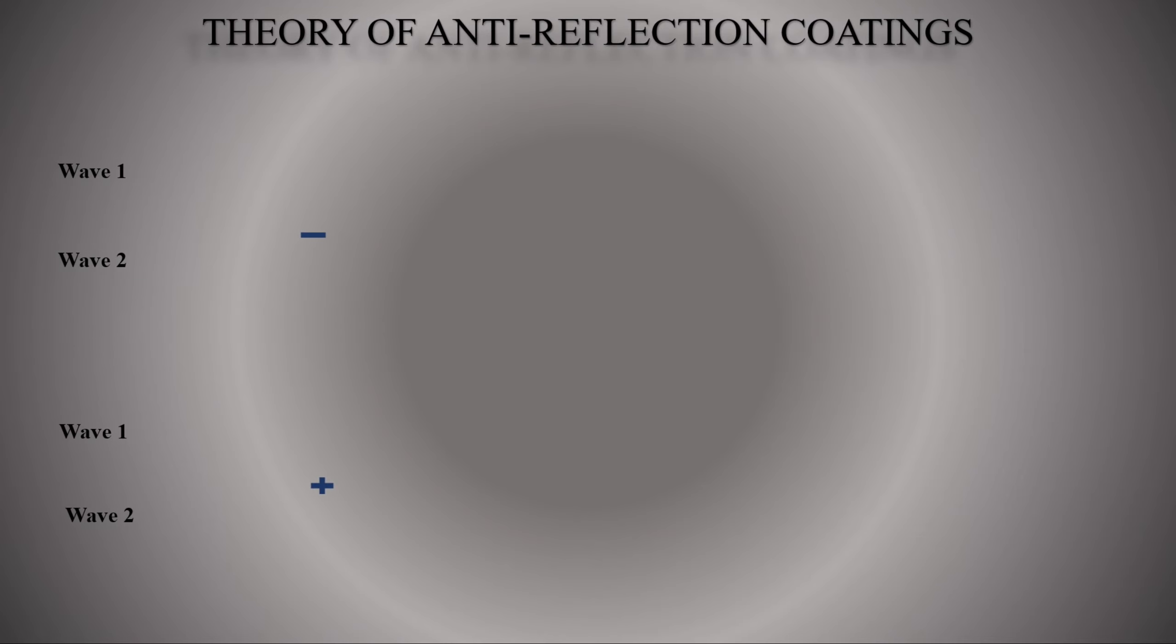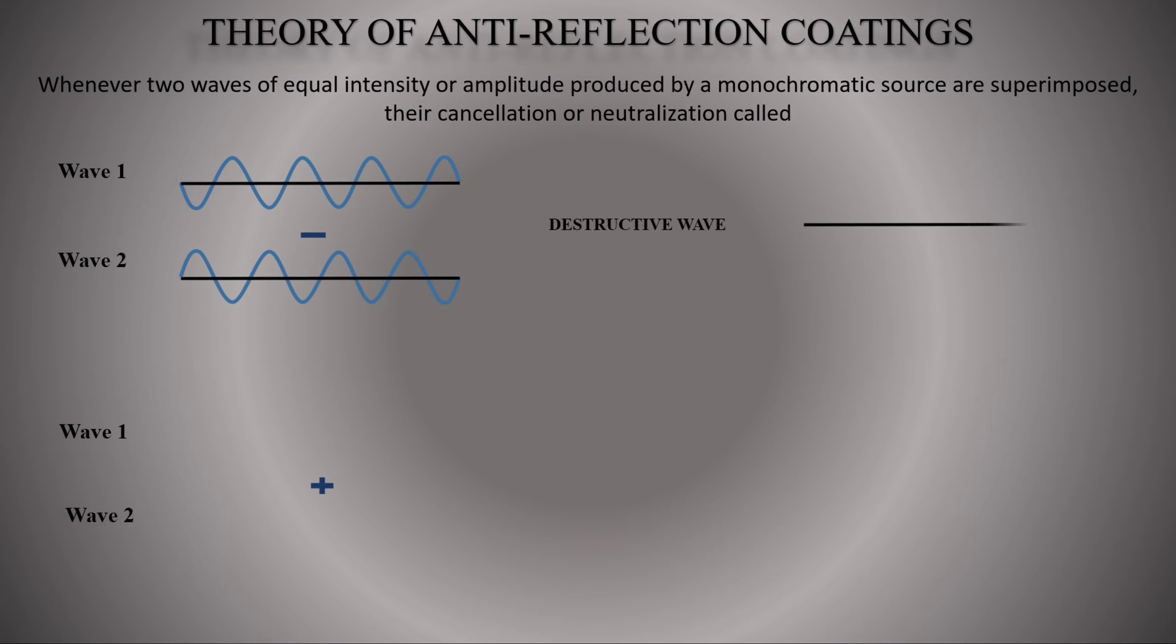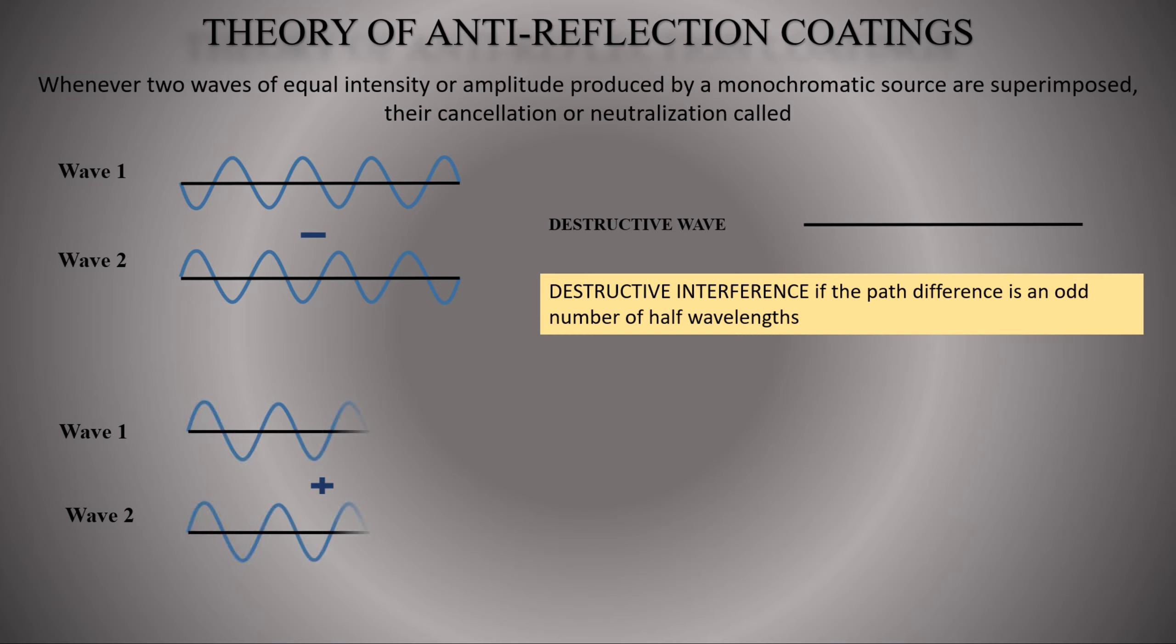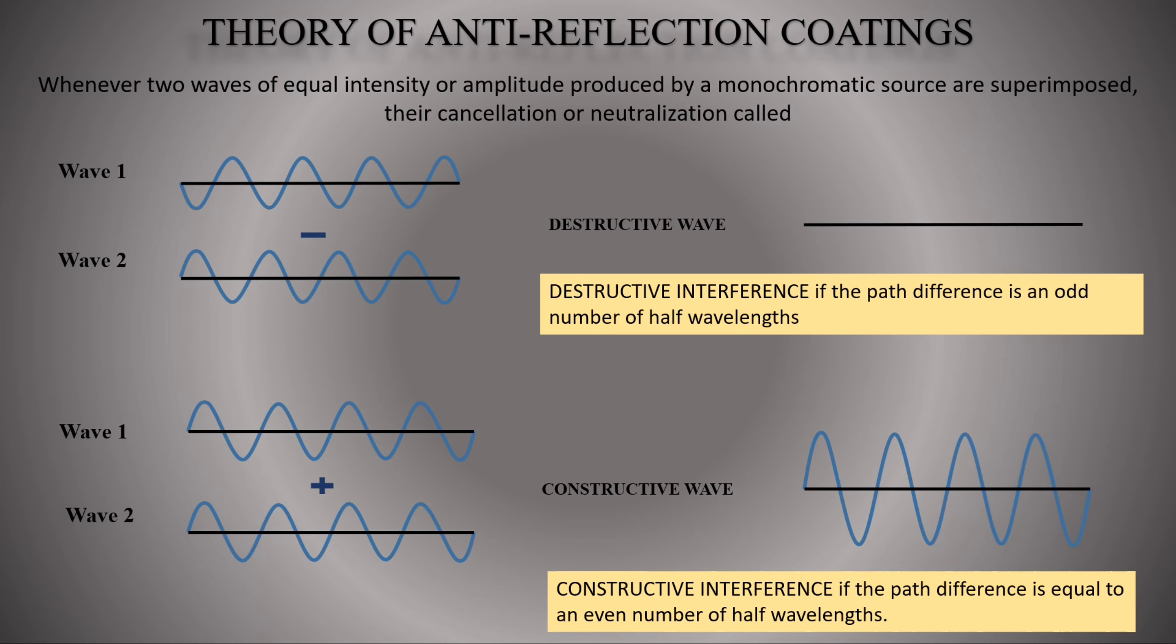Theory of anti-reflection coating uses the wave nature of light or principle of interference. Whenever two waves of equal intensity produced by a monochromatic source are superimposed, there is cancellation or destructive interference if the path difference is an odd number of half wavelengths, and constructive interference if path difference is equal to an even number of half wavelengths.